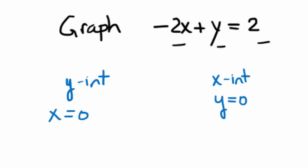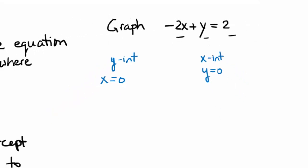Recall that finding the y-intercept involves letting x equal zero, and finding the x-intercept involves letting y equal zero. Let's find the y-intercept first. Plugging in zero for x, we have negative 2 times 0 plus y equals 2, or just y equals 2. So the y-intercept is the point where x is zero and y is two.